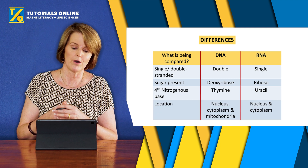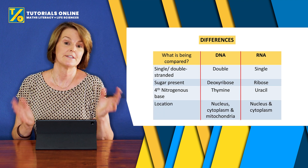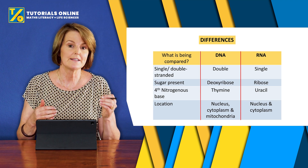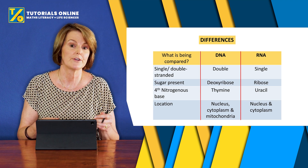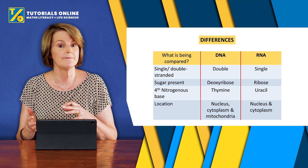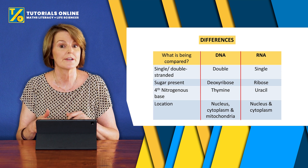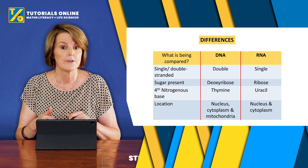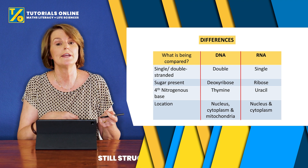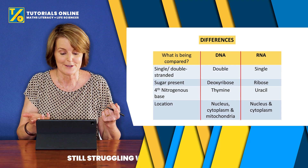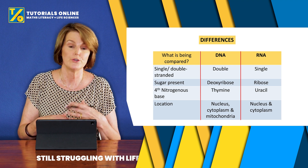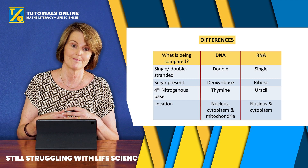The last difference is where each is found. DNA is found in the nucleus, in the cytoplasm, and in the mitochondria — you get nuclear DNA and extra-nuclear DNA. RNA is found in the nucleus and the cytoplasm.